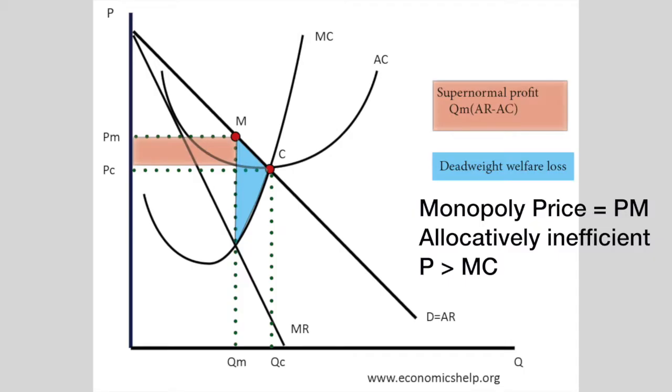The first big disadvantage of monopolies, something recognized by Adam Smith back in the 18th century, was that monopolies are able to increase prices to gain more consumer surplus. Because there's no alternative — if you face a monopoly provider and they put up the prices, consumers will pay. For example, if one company delivers water to your house and puts up prices, you have no alternative. This is allocatively inefficient because if a monopoly raises prices significantly above marginal cost, that's a definition of allocative inefficiency, and consumers will have less income to spend on other goods and services.